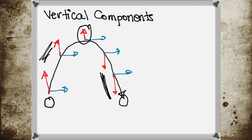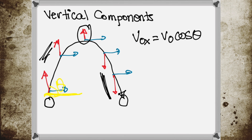In a vertically launched projectile, since the projectile was launched at an angle from the horizontal, you will have an angle. Therefore, your initial horizontal velocity V0x equals V0 cosine of the angle, and your initial vertical velocity V0y equals V0 sine of the angle.